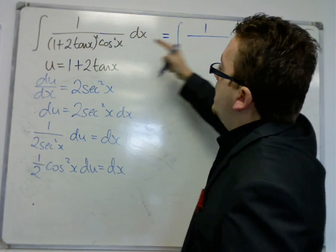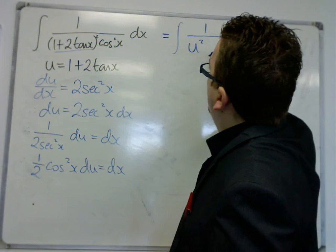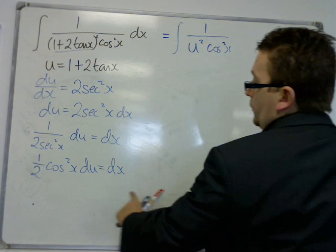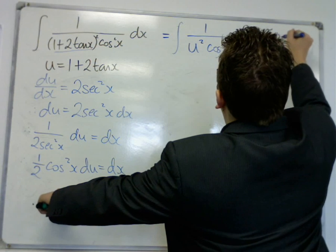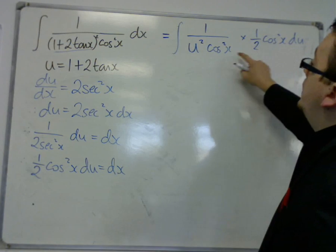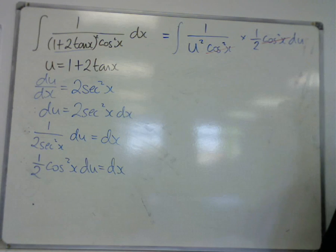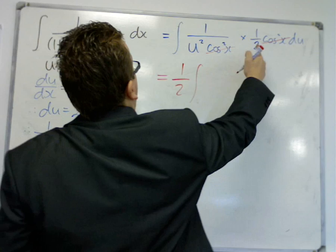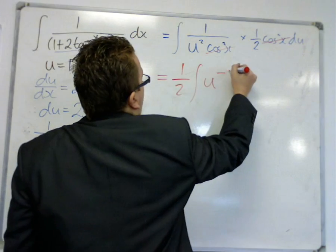So, we've got 1 over. Now, this is the u. I've got cos squared there. And the dx has been replaced with 1 half cos squared du. Now, you should notice that you've got a cos squared over cos squared here. So, 1 divided by itself. So, they disappear. The 1 half could be brought outside of the integral sign. And the 1 over u squared that's left can be written as u to the minus 2.